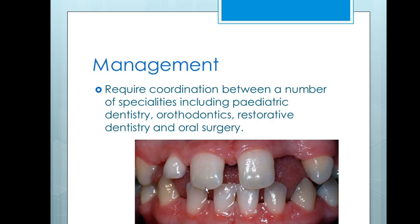Looking at this slide, we can see the two central incisors of the deciduous dentition. Here we have a peg-shaped or conical tooth, which represents the lateral incisor. In this case, the lateral is present on one side in a conical form but absent on the other side. Normally both lateral incisors are absent, but sometimes one may appear as a peg or conical shape while the other is absent — or both laterals may be absent.